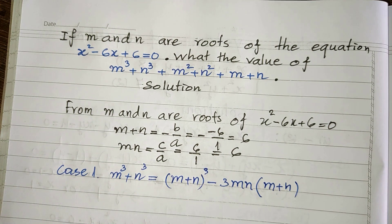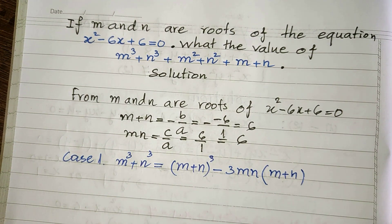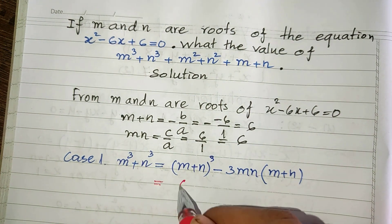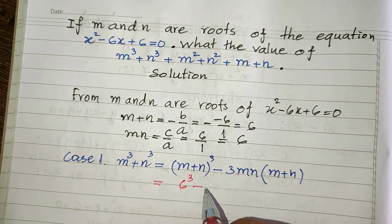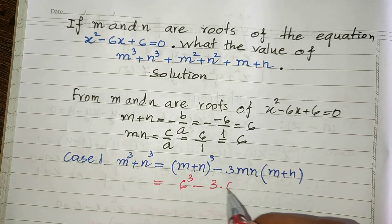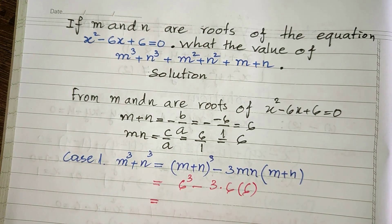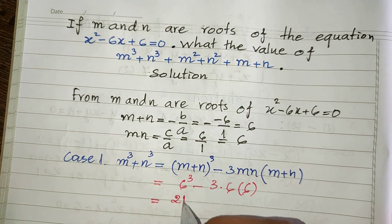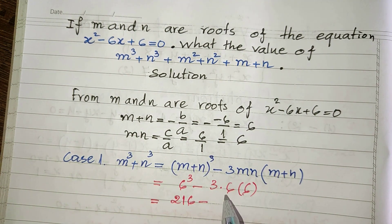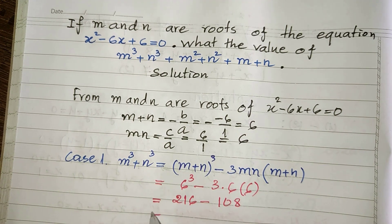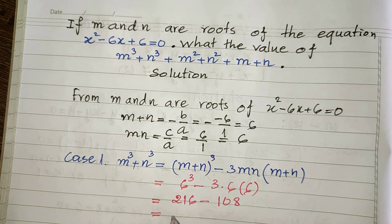Now we replace m plus n with 6 and mn with 6. So m cubed plus n cubed equals 6 cubed minus 3 times 6 times 6, which equals 216 minus 108, and equals 108.